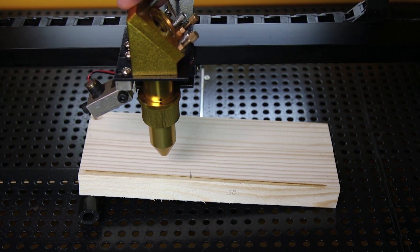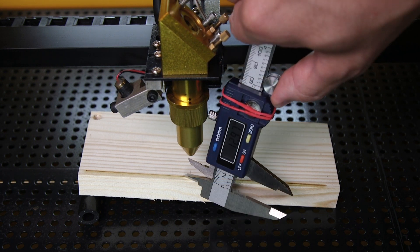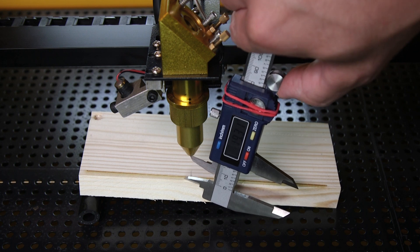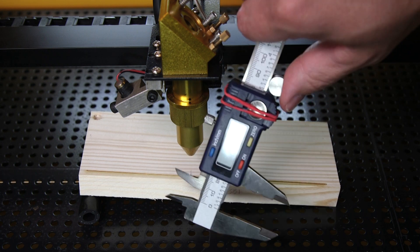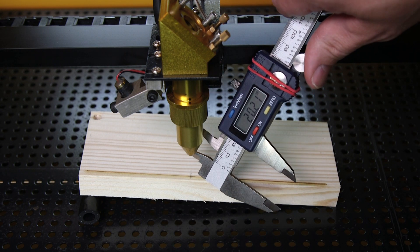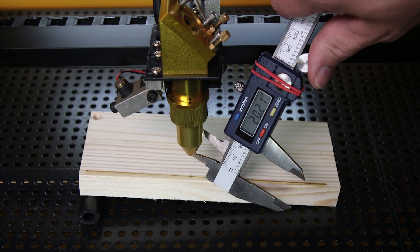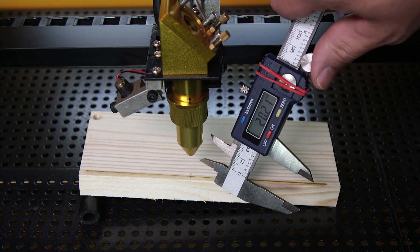Now you want to take your laser head and move it over that point that you just marked. Using some calipers, measure the distance between that area you just marked and the tip of your laser head. As you can see, I got 20 millimeters with mine, which means to focus my particular laser, my laser head needs to be 20 millimeters away from the material I'm working on.